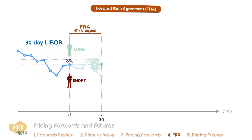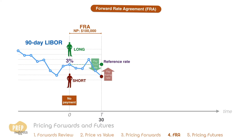As the short, Red has to pay Green the floating rate at expiration of the contract. Green and Red enter into a 30-day forward rate agreement with a current one-year LIBOR of 3% as the reference rate on a notional value of $100,000. As with forward contracts, no payment is made at initiation. The payment is only made at settlement.